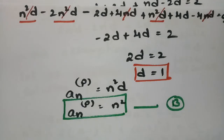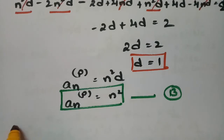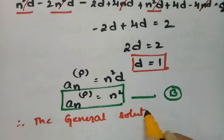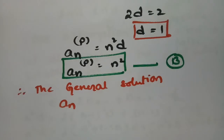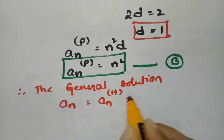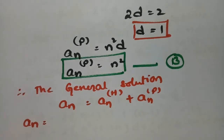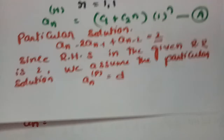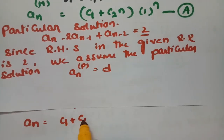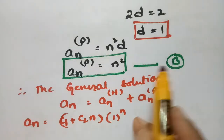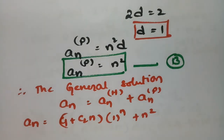Therefore the general solution is a_n = a_n^(h) + a_n^(p) = C1·(1)^n + C2·n·(1)^n + n². So the general solution is a_n = C1 + C2·n + n².